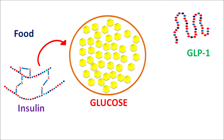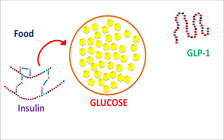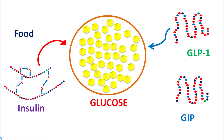Apart from insulin, a few other mediators can also control glucose. One important mediator is GLP-1 — Glucagon-Like Peptide 1. This peptide is structurally similar to glucagon but reduces glucose levels by promoting insulin secretion. GLP-1 can control glucose levels by various mechanisms. Similarly, another mediator is GIP — Glucose-Dependent Insulinotropic Polypeptide — which can also control glucose levels based on elevated glucose. These two mediators, GLP-1 and GIP, are well known as incretins.